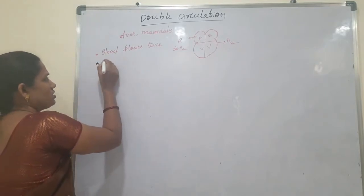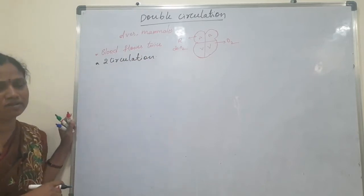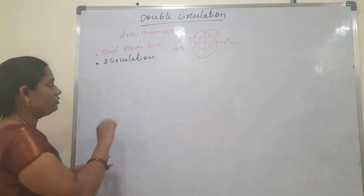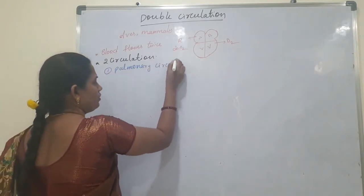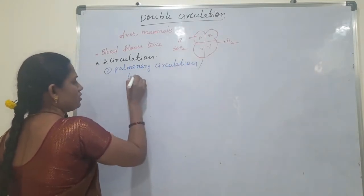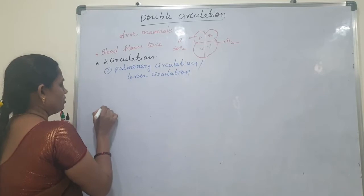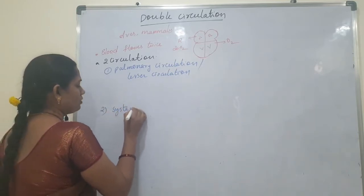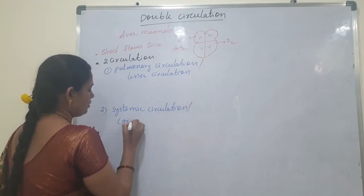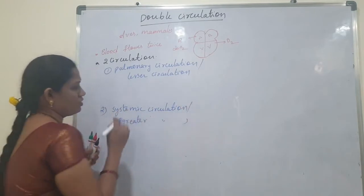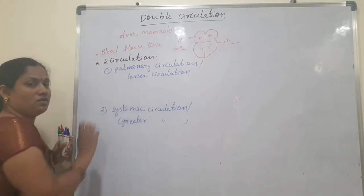There are two circulations present in double circulation. The first one is pulmonary circulation, also called lesser circulation. The second one is systemic circulation, also called greater circulation. That is why this is called double circulation.